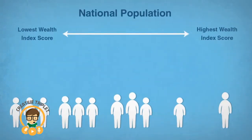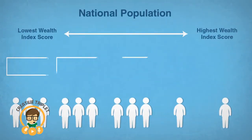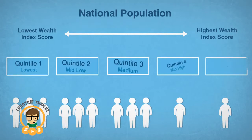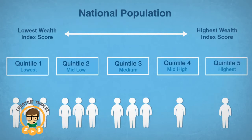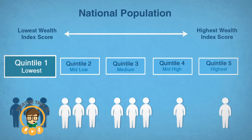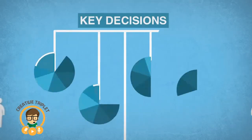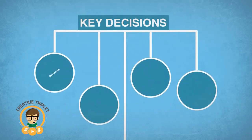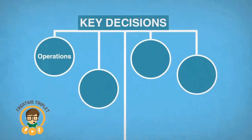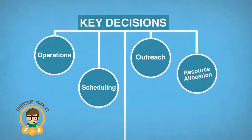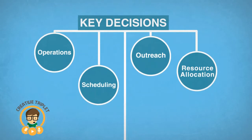With a quick survey, you'll see which wealth quintiles your beneficiaries are in — how many of your clients are in the lowest wealth group, how many are in the wealthiest group, or how many fall somewhere between — helping you make key decisions about operations, scheduling, outreach, or resource allocation.